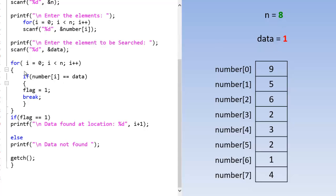So in the first iteration i value is 0. So I go and check the 0th index. Number of 0. Number 0 represents the first element in the index. So this is number 0. If number 0 equals to data which is 1, we will set flag 1. But in this case it is not. So i will be incremented.